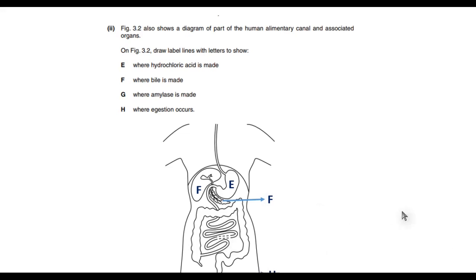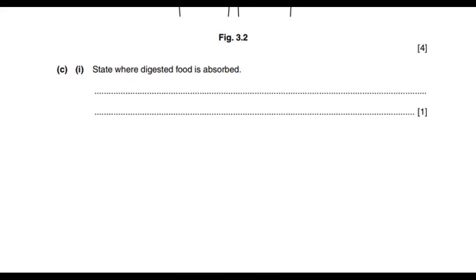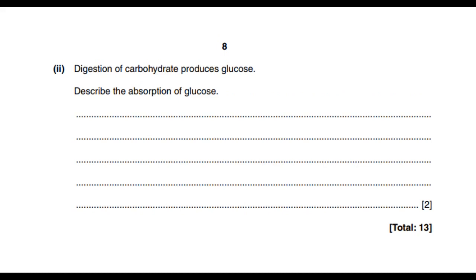Digested food is absorbed in the small intestine. Digestion of carbohydrates produces glucose. Describe the absorption of glucose—how is glucose absorbed into the bloodstream? We know that digestion of food happens in the small intestine. What helps for the digestion to occur is the presence of the villi. Absorption happens due to the presence of the villi in the small intestine, and they help for the absorption of materials into the bloodstream.